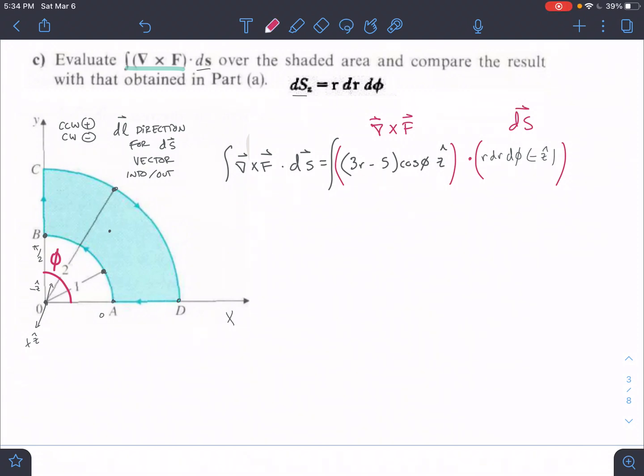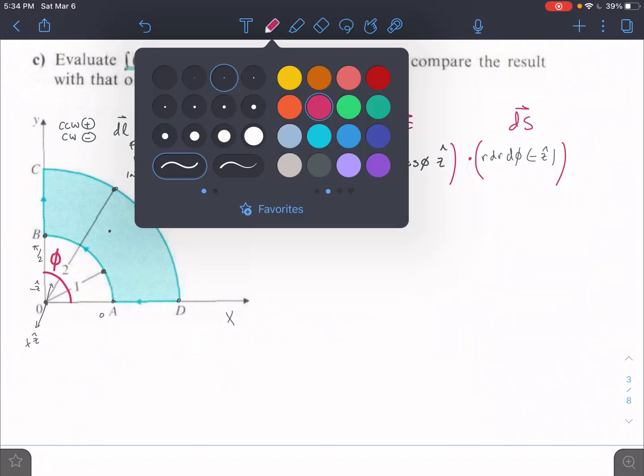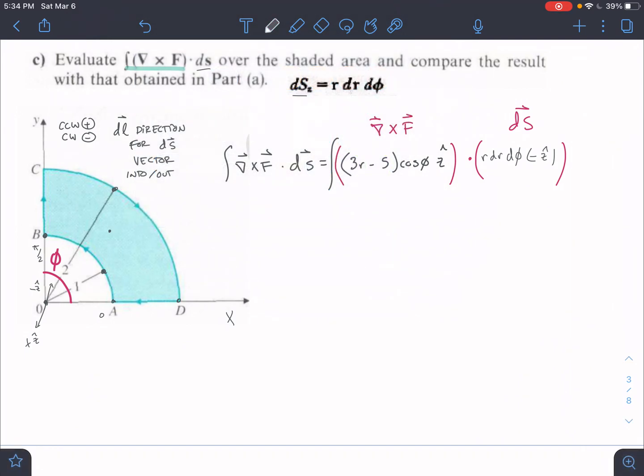Okay, so we found a curl in part B, and now we are looking for the right-hand side of the Stokes theorem in part C, where we're trying to find this curl dot ds and integrate.